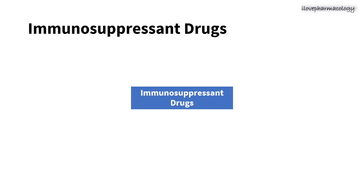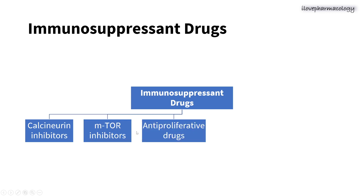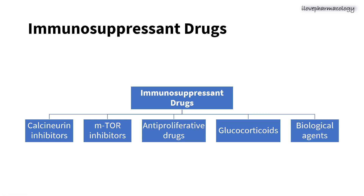Coming to the classification of immunosuppressant drugs, there are five broad classes: calcineurin inhibitors, mTOR inhibitors (mTOR stands for mammalian target of rapamycin), anti-proliferative drugs, glucocorticoids, and biological agents.